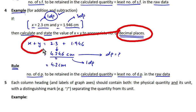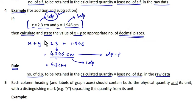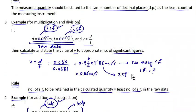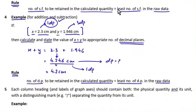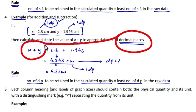Before moving further, remember the difference between the last two rules: we round off the calculated value to the appropriate number of significant figures if the value is obtained by multiplication or division, whereas we round off to the appropriate number of decimal places if the value is obtained by addition or subtraction.